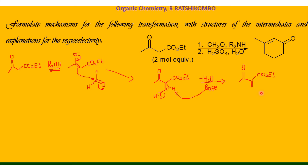So the Michael acceptor is formed. Now we have an addition of another enolate — like this one here — and in terms of mechanism, this will be the mechanism between the two.